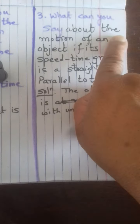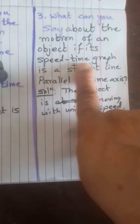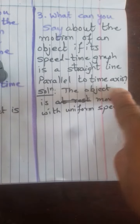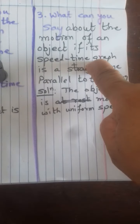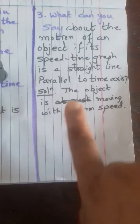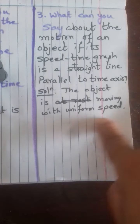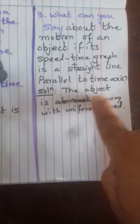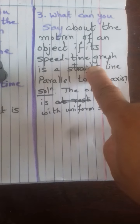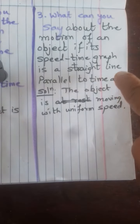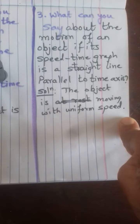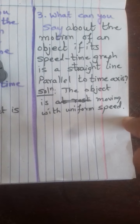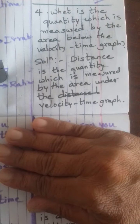Now the third question: What can you say about the motion of an object if its speed-time graph is a straight line parallel to the time axis? The speed-time graph is almost similar to the velocity-time graph. The answer is: the object is moving with uniform speed — that is, with constant speed without changing its speed.